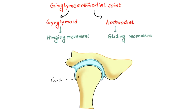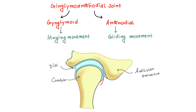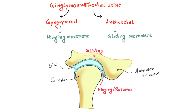Here you can see the TMJ — this is the condyle, this bony prominence is the articular eminence, and this blue one is the disc. Hinging or rotation movement is done in the lower compartment of the joint, and gliding is done in the upper compartment. The rotation is always in a forward and downward direction.